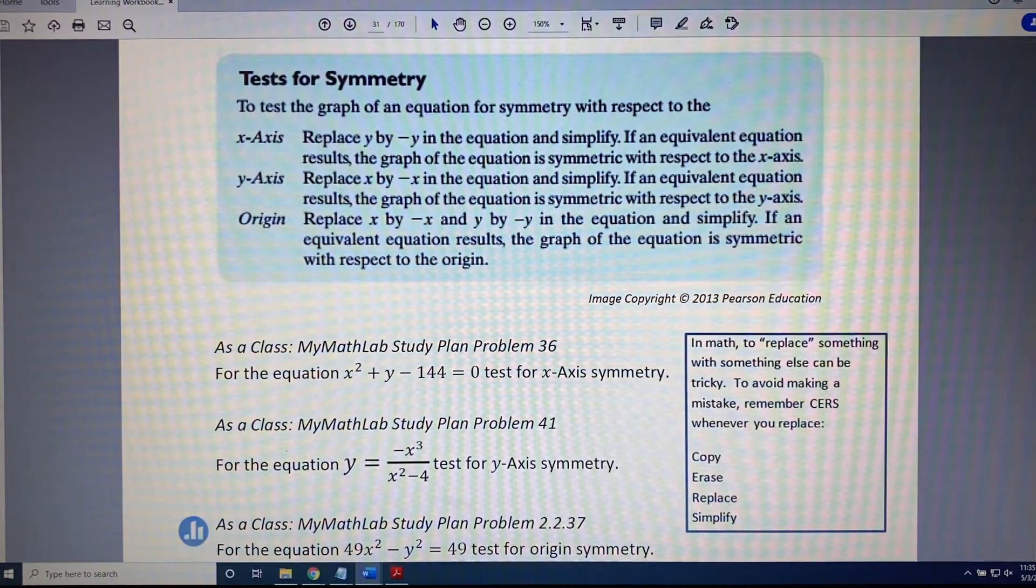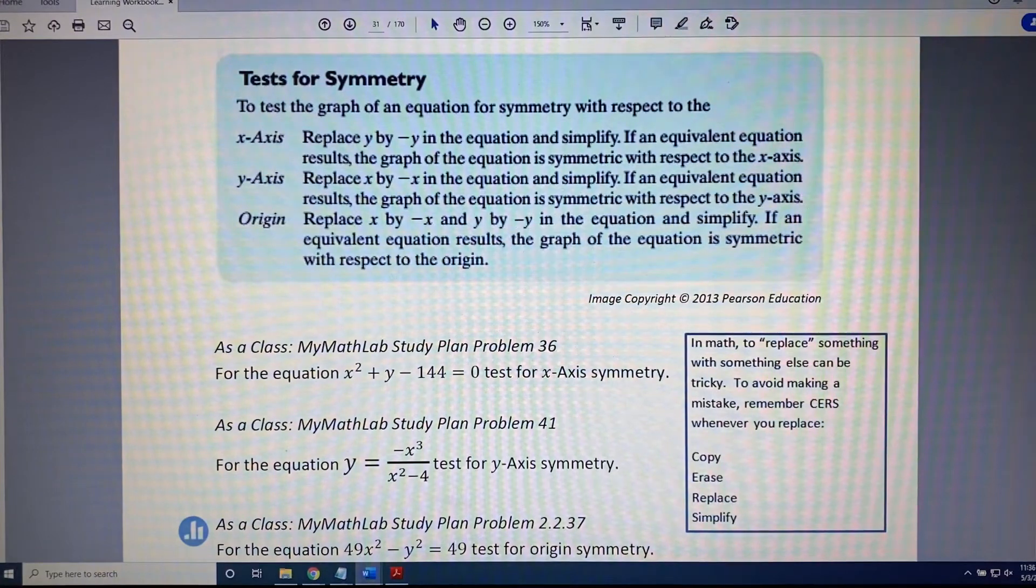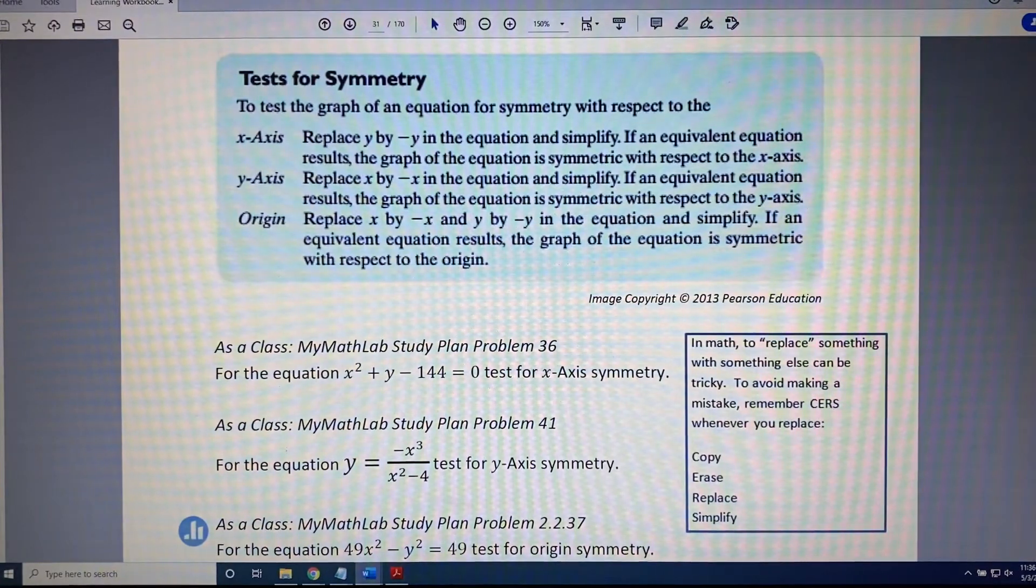If the starting equation and the simplified equation at the end match, then the type of symmetry you are testing for is there. If they do not match, then the type of symmetry you are testing for is not there.